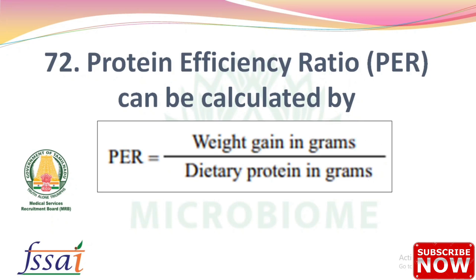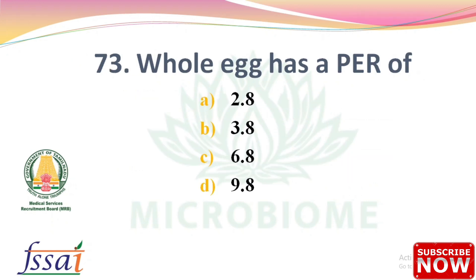Next: Protein Efficiency Ratio (PER) can be calculated by: PER = Weight gain in grams / Dietary protein in grams. Next: Whole egg has a Protein Efficiency Ratio of — options: 2.8, 3.8, 6.8, 9.8. The right answer is option B, 3.8.